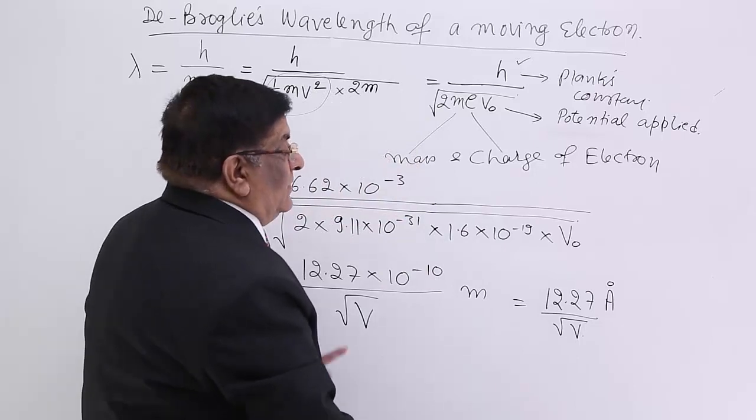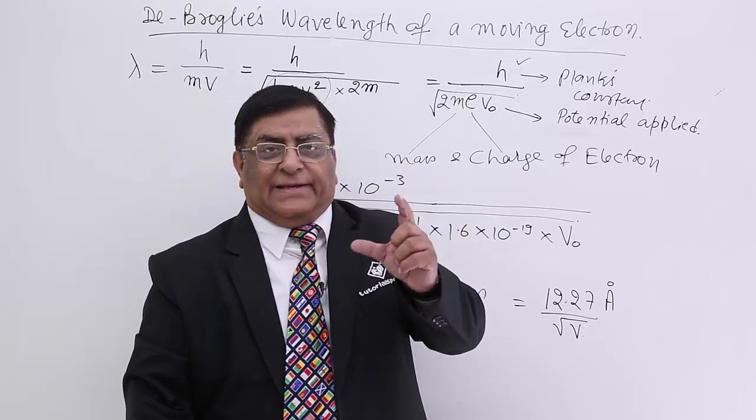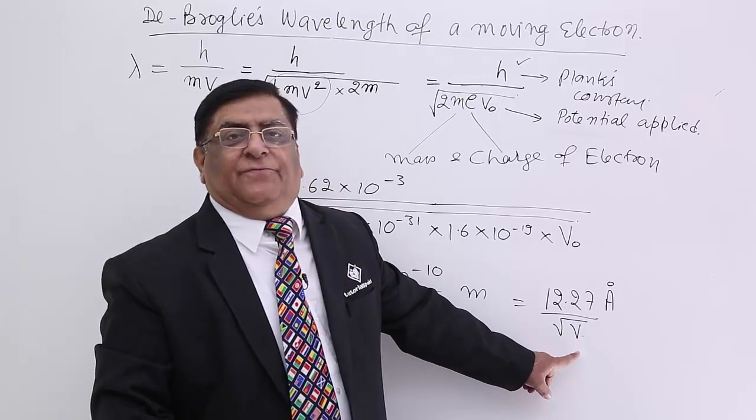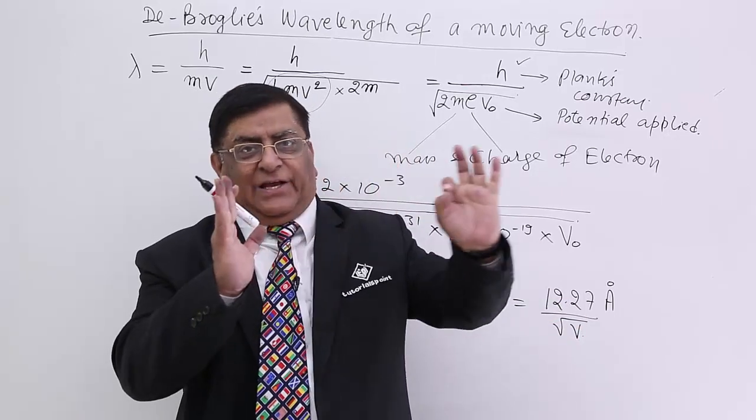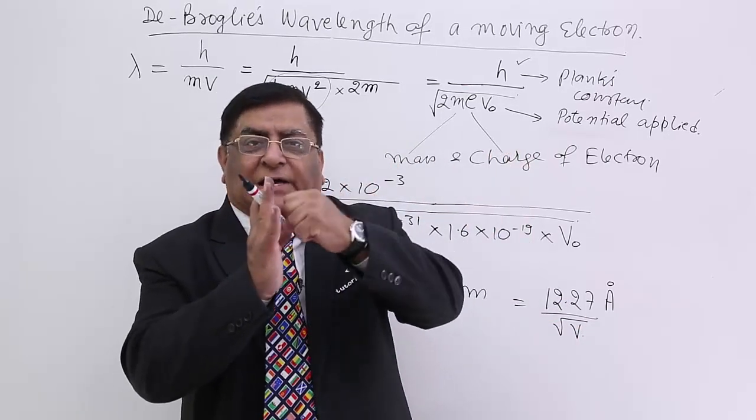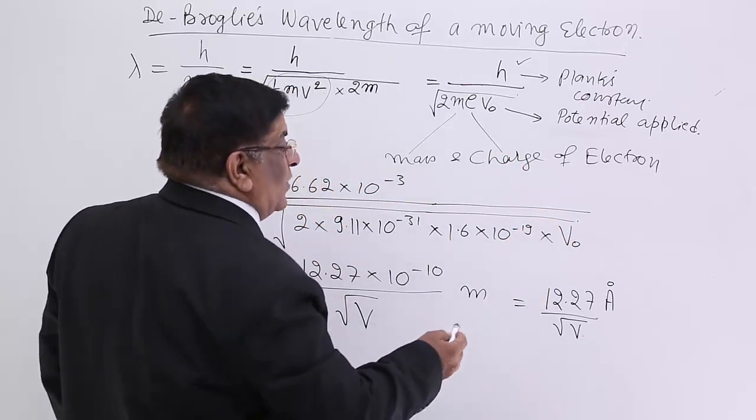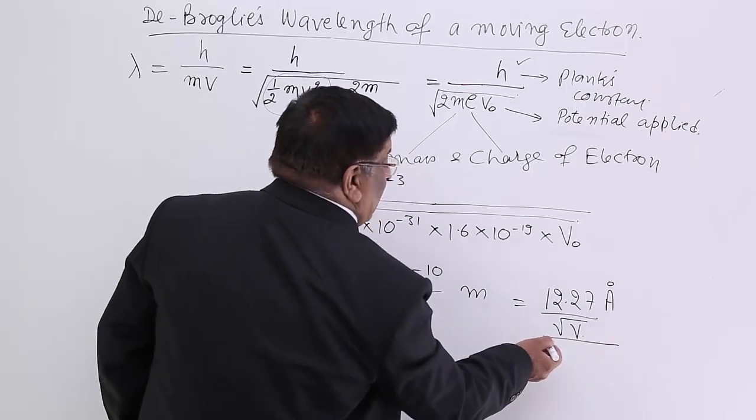This wavelength will increase or decrease according to the potential difference which is exciting the electron, asking the electron to move. This was the calculation done by de Broglie.